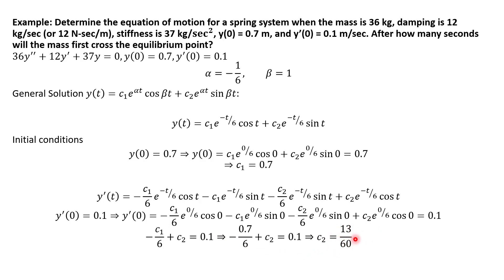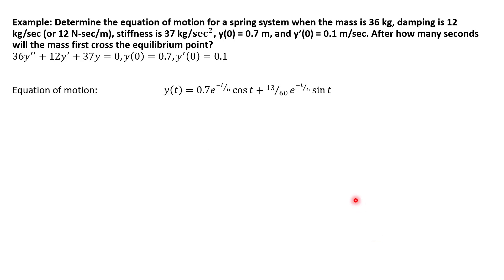Our equation of motion is now complete — we plug in c₁ = 0.7 and c₂ = 13/60. This is the first half of the question. The equation of motion gives the displacement of the mass on the spring at any time t.